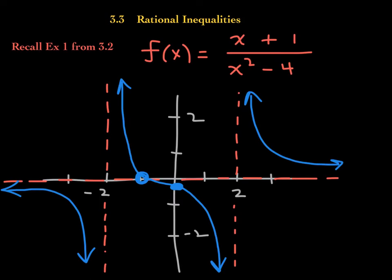To get started, I want us to look back at Example 1 from the previous lesson — Example 1 from Section 3.2. You may need to flip back in your notes, but you'll find that our function was (x + 1) over (x² - 4), and this was the graph. We worked really thoroughly to get this graph. We are going to answer some questions regarding rational inequalities by looking at this graph.